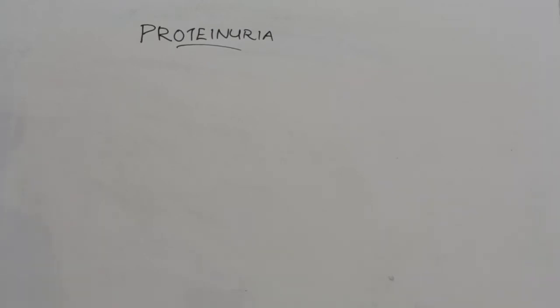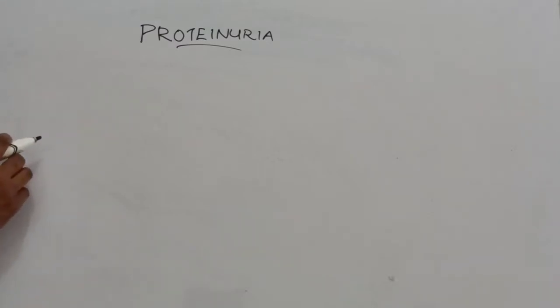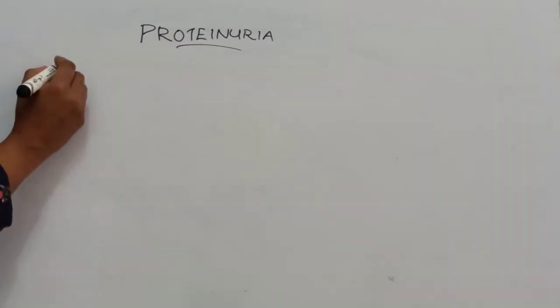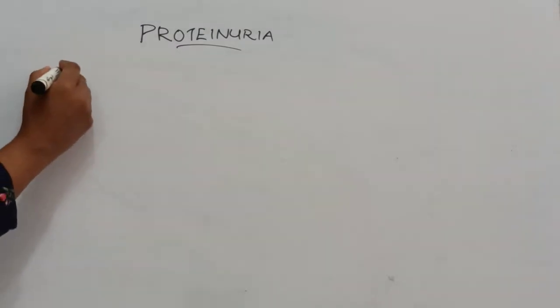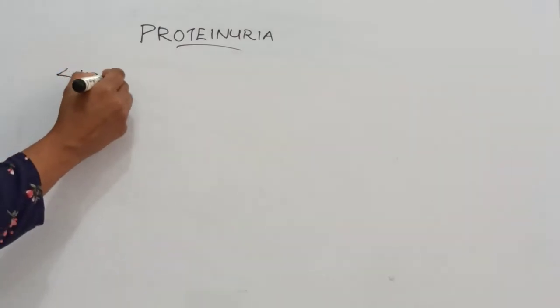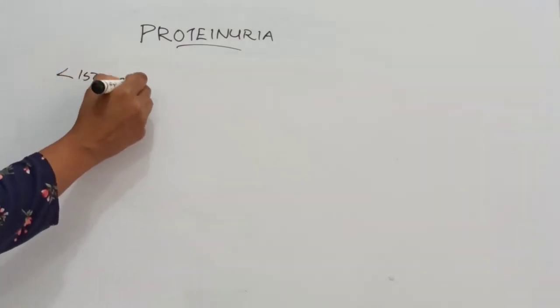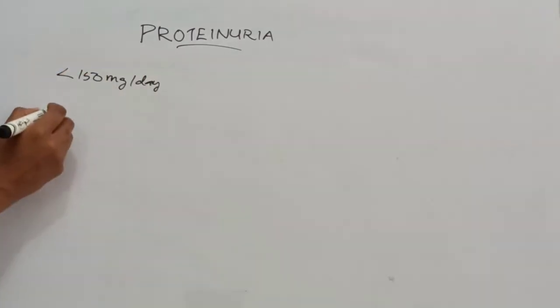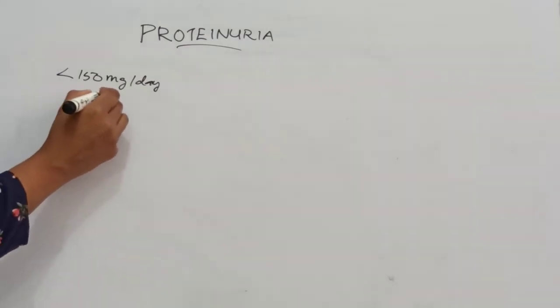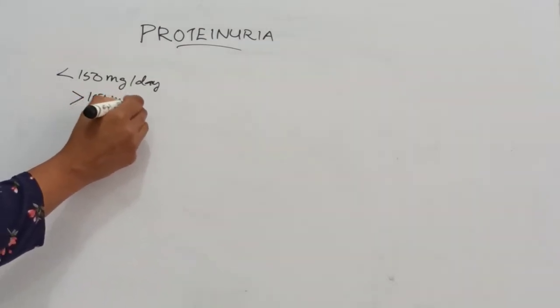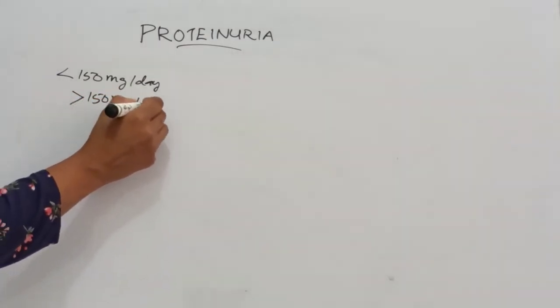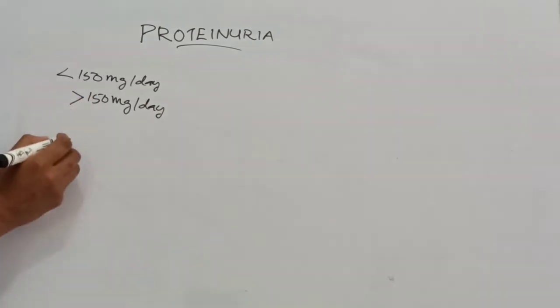Hello everyone, today we will discuss about proteinuria. Proteinuria is high levels of protein in urine. Normal protein excretion in urine is less than 150 mg per day. If the protein excretion in urine is more than 150 mg per day, it is known as proteinuria.